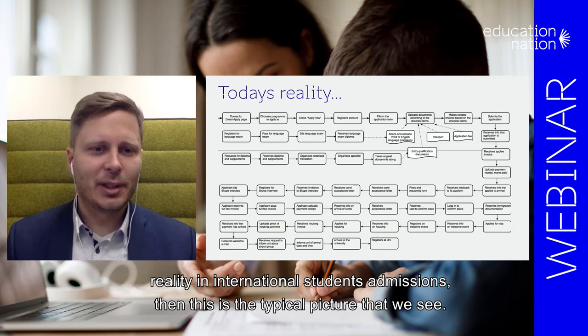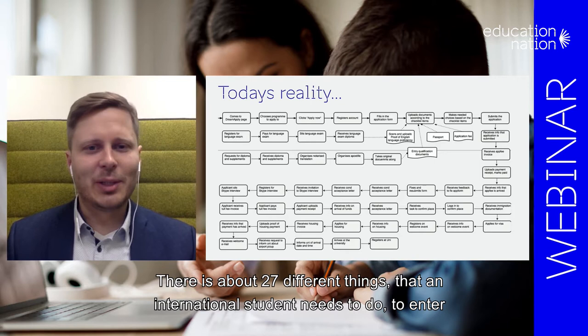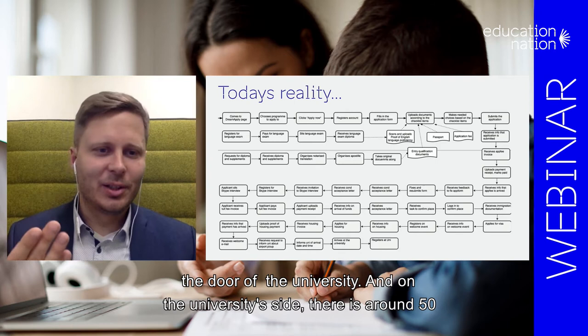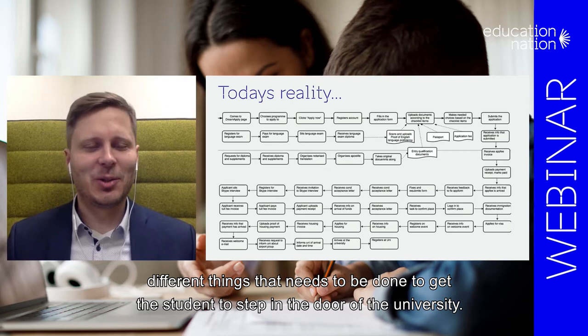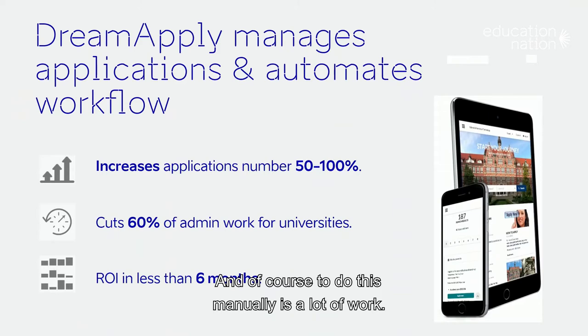If we look at today's reality in international student admissions, this is the typical picture that we see. There are about 27 different things that an international student needs to do to enter the door of the university. And on the university side, there are around 50 different things that need to be done to get the student to step through the door. And of course, to do this manually is a lot of work.